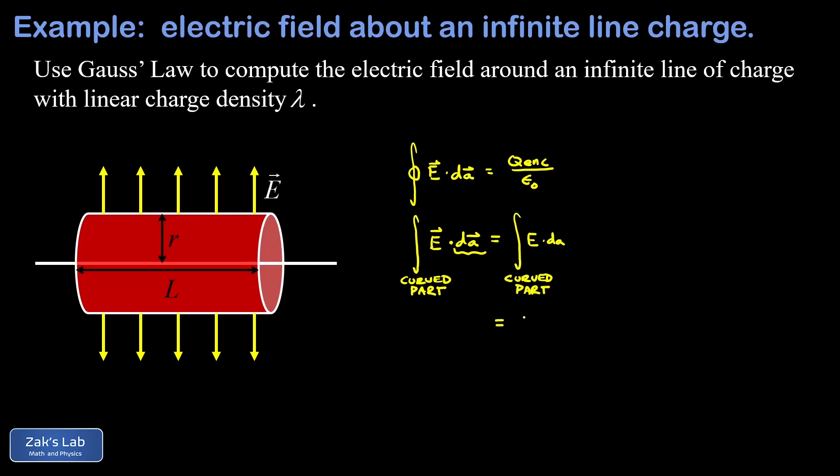Next we exploit the symmetry of our Gaussian surface again by saying that every single patch of area along this curved surface is at the same distance from our infinite line of charge, and therefore the electric field must have the same magnitude at every point. Because e is a constant it can now be factored out of the integral.